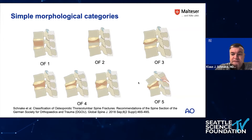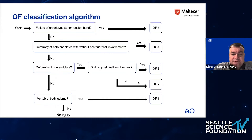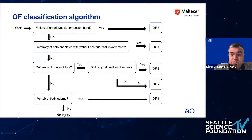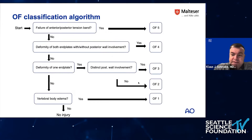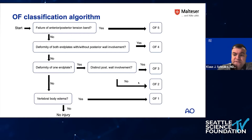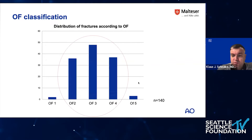If you want to classify using this algorithm, first look for anterior or posterior tension band failure — if present, it's OF5. If not, check whether both end plates are deformed — if so, it's automatically OF4. If only one end plate is deformed, check whether the posterior wall is clearly involved (more than one fifth) — if so, it's OF3. Everything else with minor or no posterior wall involvement is OF2. If there's no deformation but MRI shows edema, it's OF1. Typically, OF1 and OF5 are rather rare; the majority of fractures are OF3, OF4, and then OF2.